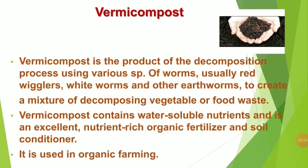Vermicompost is used as organic manure in farming. Vermicompost is the product of the decomposition process using various species of worms — usually red wrigglers, white worms, and other earthworms — to create a mixture of decomposing vegetable or food waste. Vermicompost contains water-soluble nutrients and is an excellent, nutrient-rich organic fertilizer and soil conditioner. It is mainly used in organic farming.